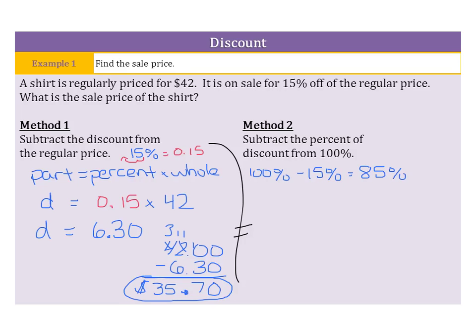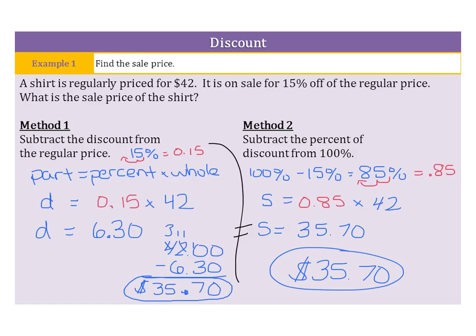So, once again, we could use our part equals percent times whole. Our part this time, we'll call S, since that's going to be the sale price directly. That's going to equal 85%, but remember, as a decimal, you have to move your decimal place back twice. So, it's 0.85, then times the whole, which is 42. And when you multiply 0.85 times 42, you get 35.70, or once again, $35.70. So, if you're looking for the discounted amount, you can use method one and then subtract, but method two may be easier if you're just looking for the sale price. The choice is yours.